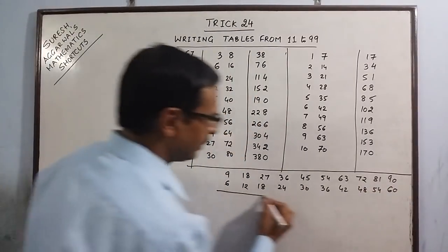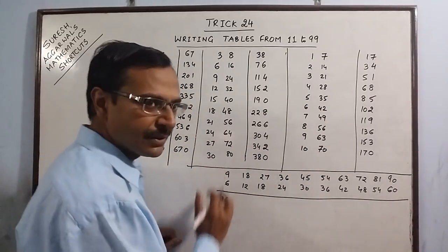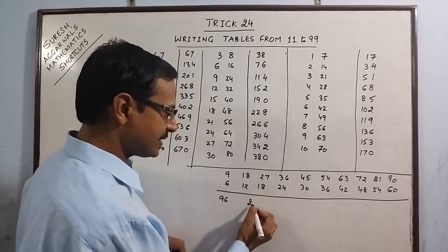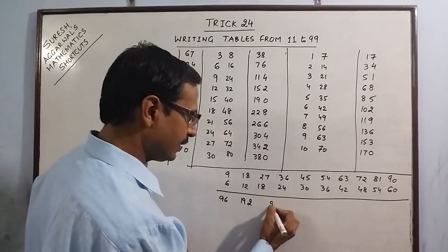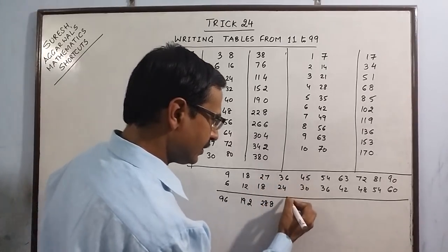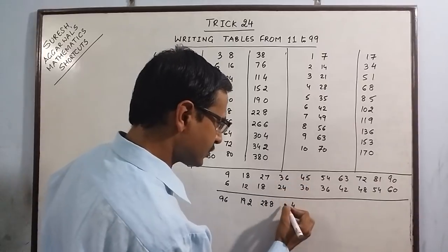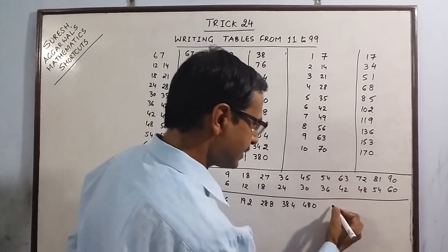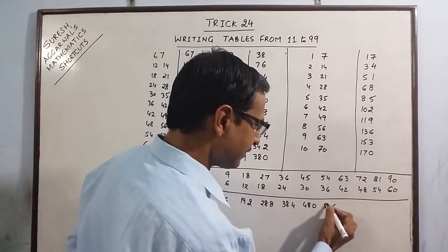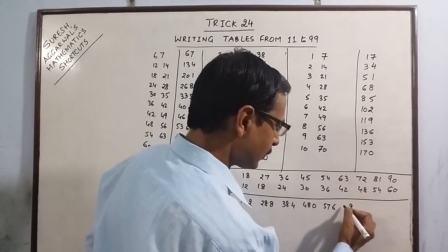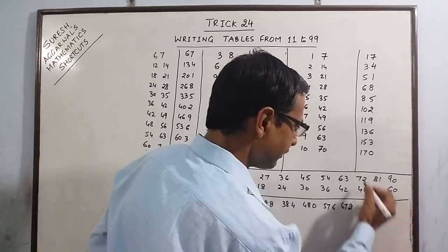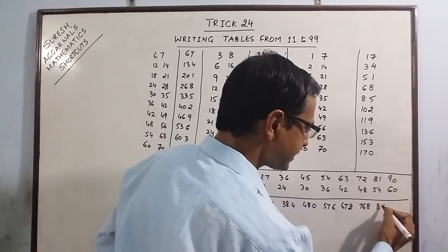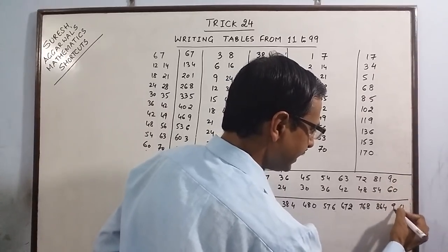Now I will write the table of 96. Since 9 and 6 are both single-digit numbers, carry the unit digit as it is: unit digit 6, 18 plus 1 is 19; unit digit 8, 27 plus 1 is 28; unit digit 4, 36 plus 2 is 38; unit digit 0, 45 plus 3 is 48; unit digit 6, 54 plus 3 is 57; unit digit 2, 63 plus 4 is 67; unit digit 8, 72 plus 4 is 76; unit digit 4, 81 plus 5 is 86; unit digit 0, 90 plus 6 is 96.